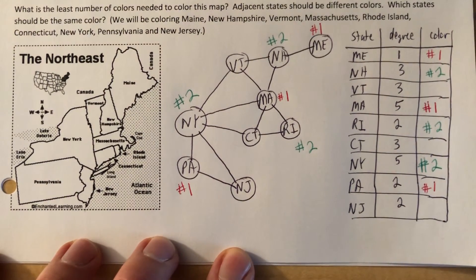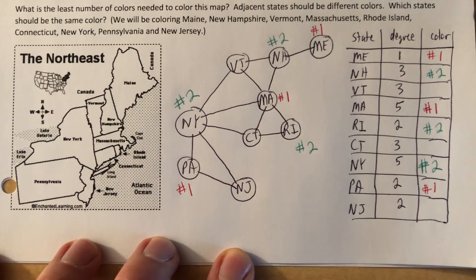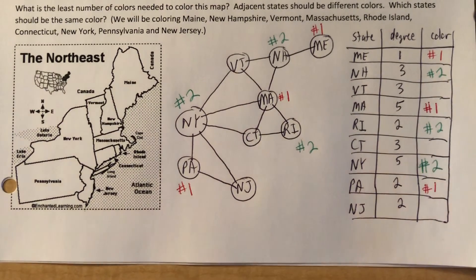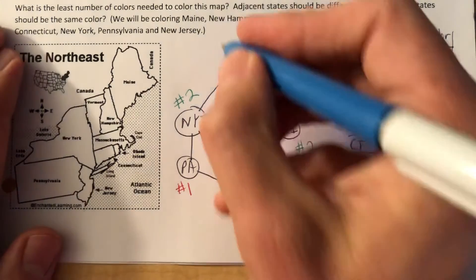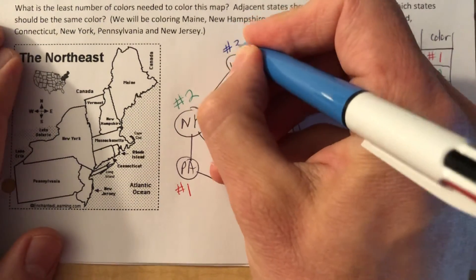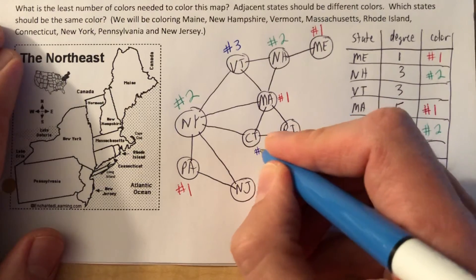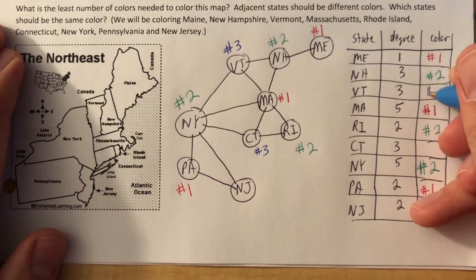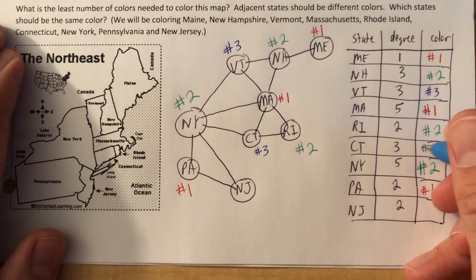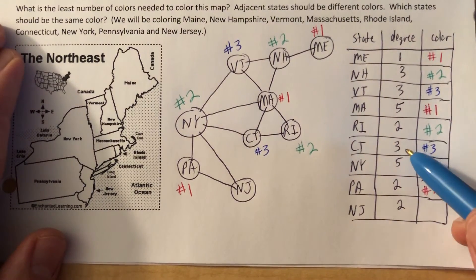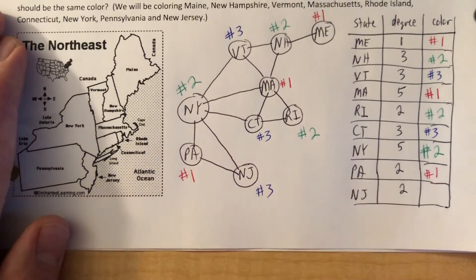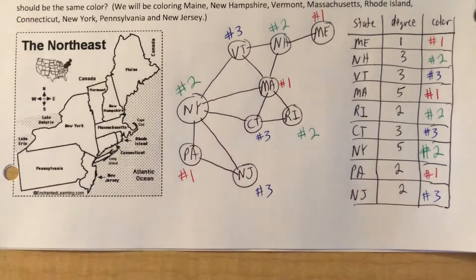Let's keep moving to the next highest degree, which is three. Vermont and Connecticut — it doesn't matter, you can color them both the same color. So Vermont is number three, Connecticut is number three. New Jersey can also be the same color because they don't share a border with each other. Color number three — not to be confused with its degree.